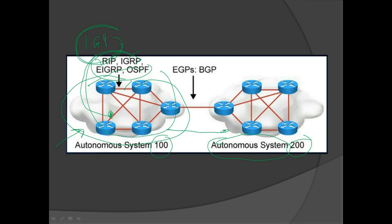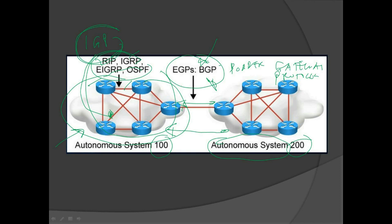If you have two different autonomous systems — two sets of routers with routing policies handled by different organizations — you will use the Exterior Gateway Protocol for connectivity between them. One good example of a dynamic routing protocol under EGP is the Border Gateway Protocol, or BGP. The exterior gateway protocol links different autonomous systems together, unlike IGP protocols which are only used inside an autonomous system.